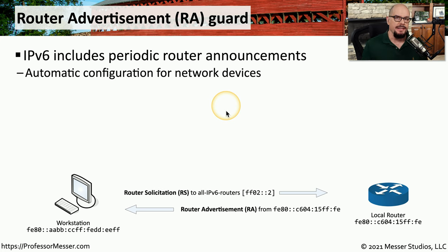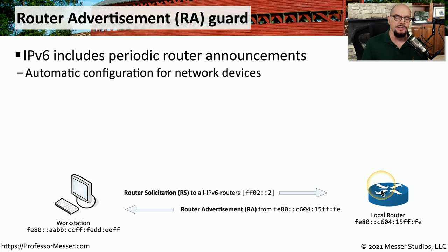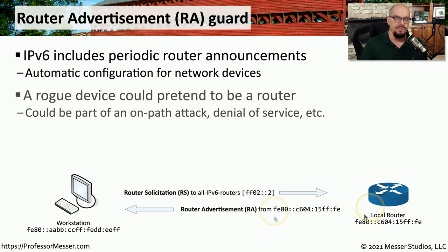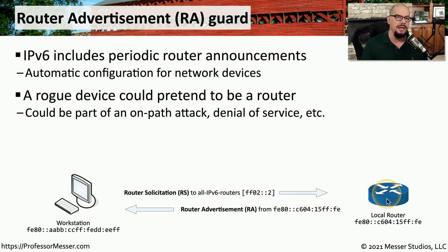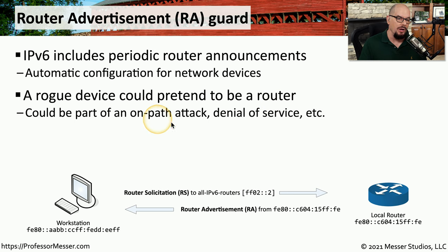This particular hardening technique focuses on the router advertisements that are sent with IPv6. Router solicitations are sent by devices on the network, and if a router sees that solicitation, it will send back a router advertisement. The security concern is that an attacker could pretend to be a router, thereby introducing the ability to perform on-path attacks or denial of service.